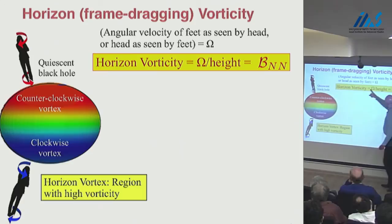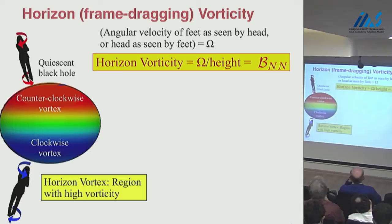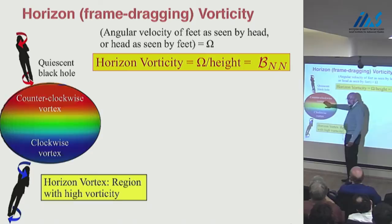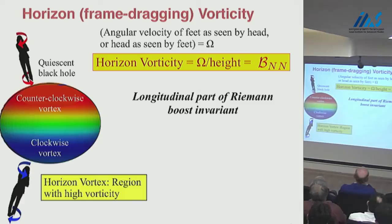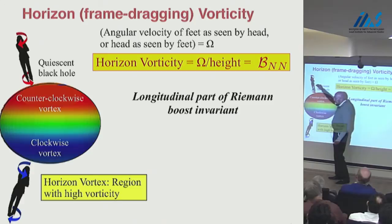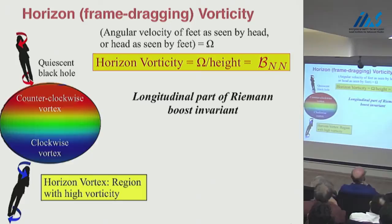We call this quantity the horizon vorticity, taking a name from fluid mechanics, though we're talking about differential frame-dragging. A region with large counterclockwise vorticity we call a vortex, or frame-drag vortex. One with large clockwise vorticity is a clockwise vortex on the horizon. This longitudinal part of the frame-drag field turns out to be boost invariant, so it doesn't matter whether she is hovering above the black hole or falling in — anybody experiences the same magnitude of strength.